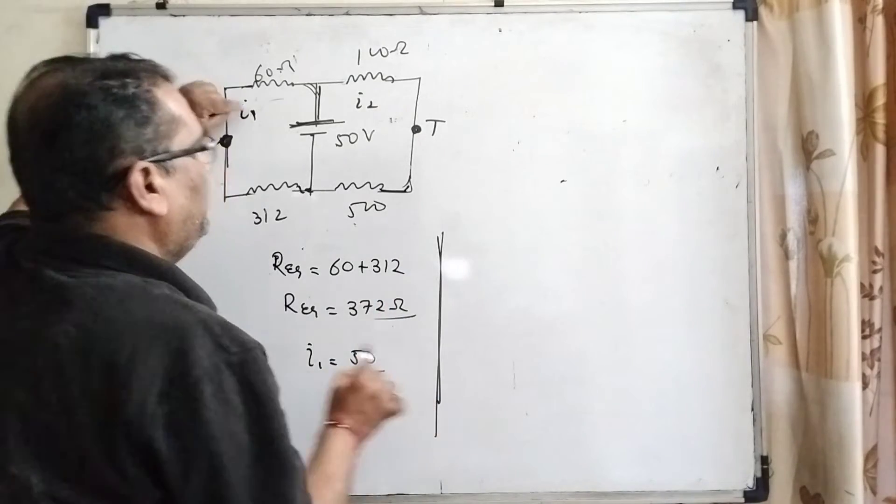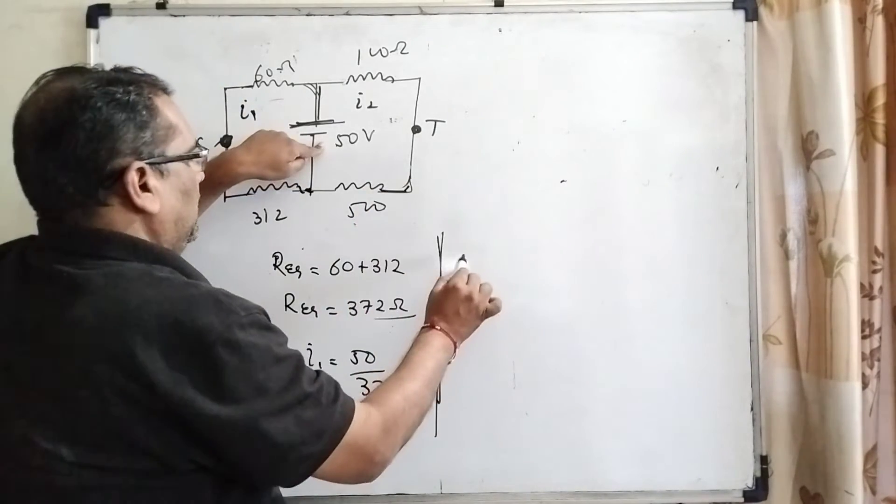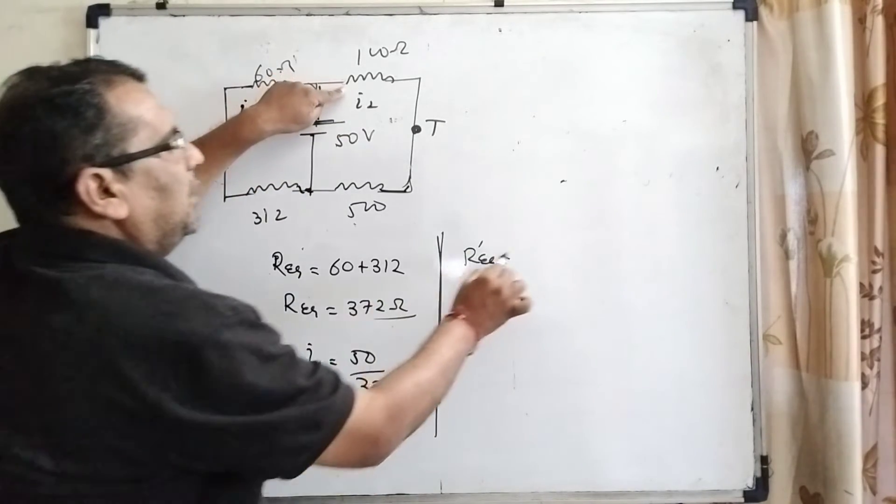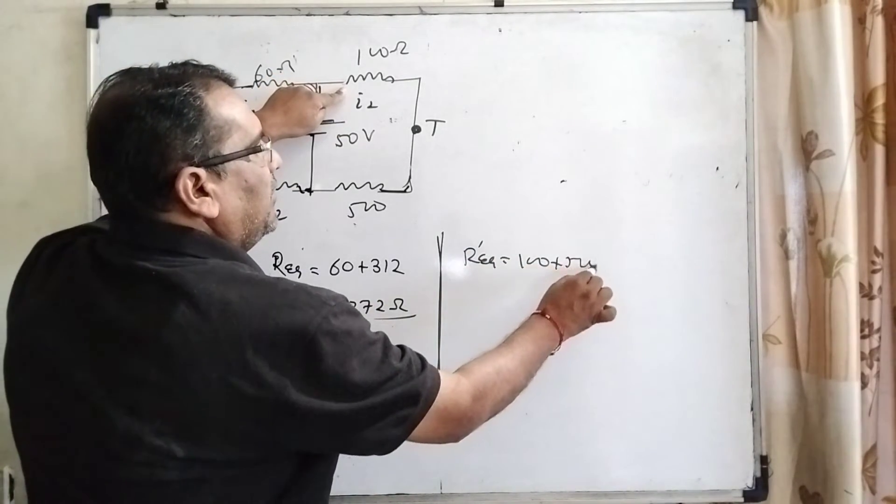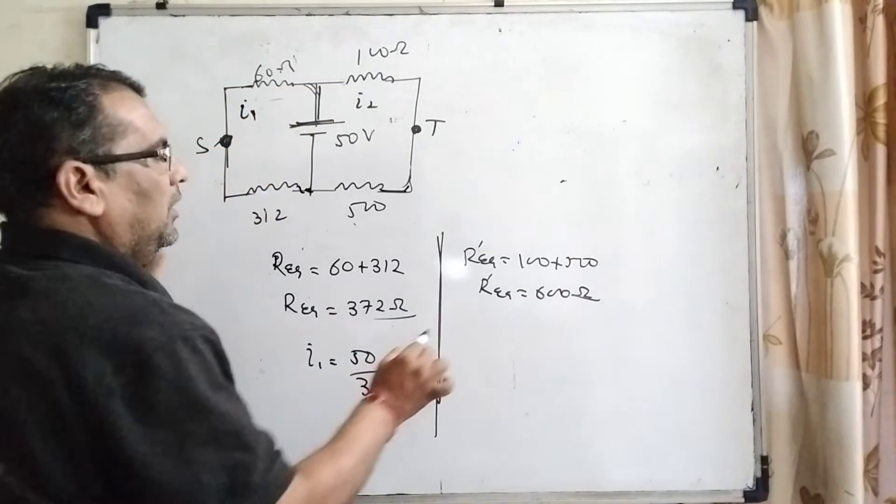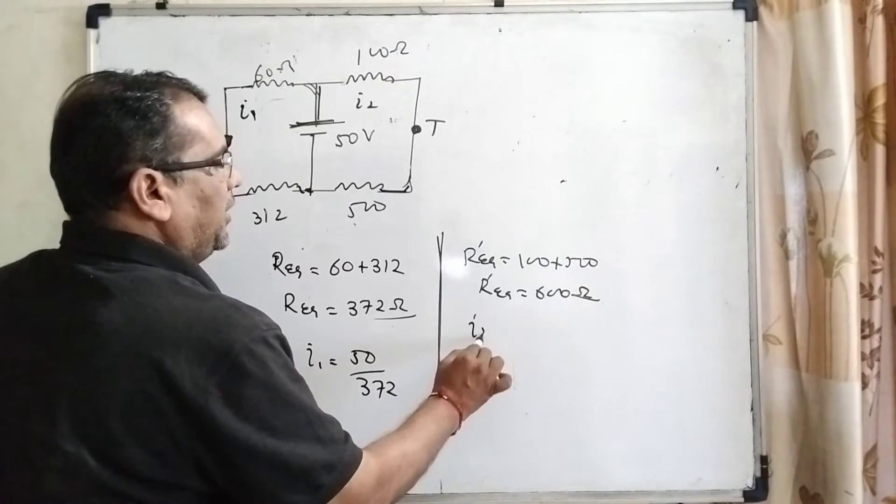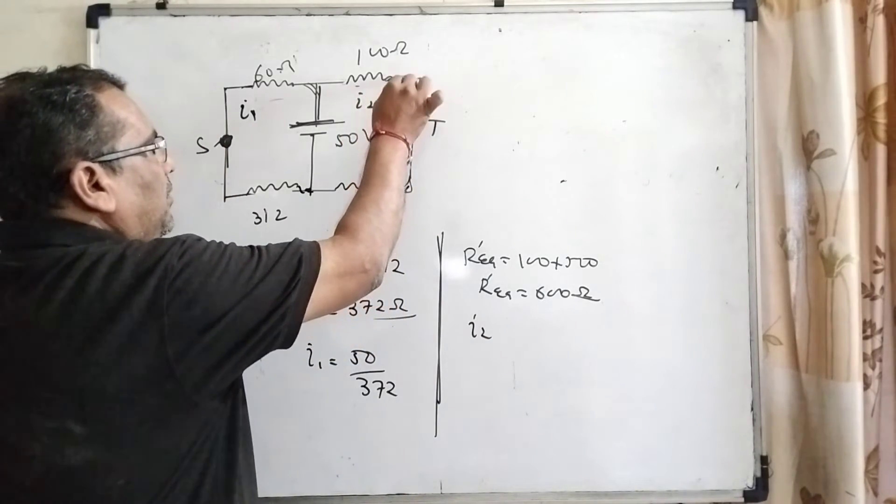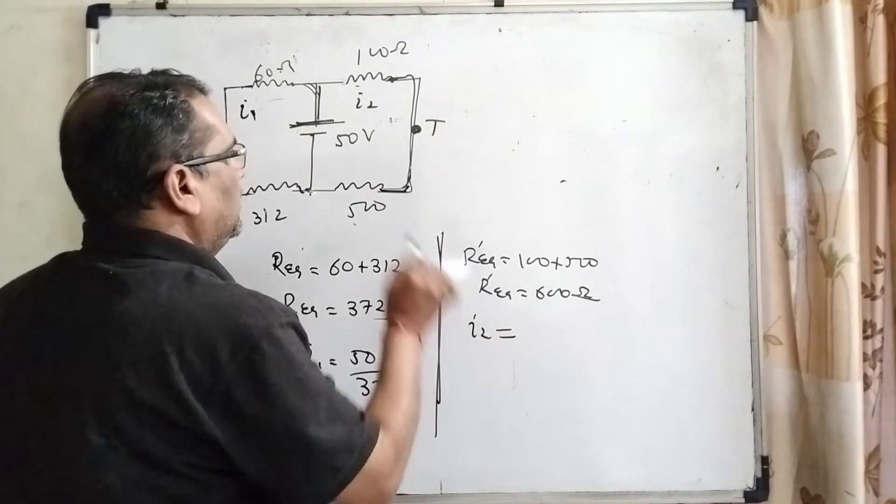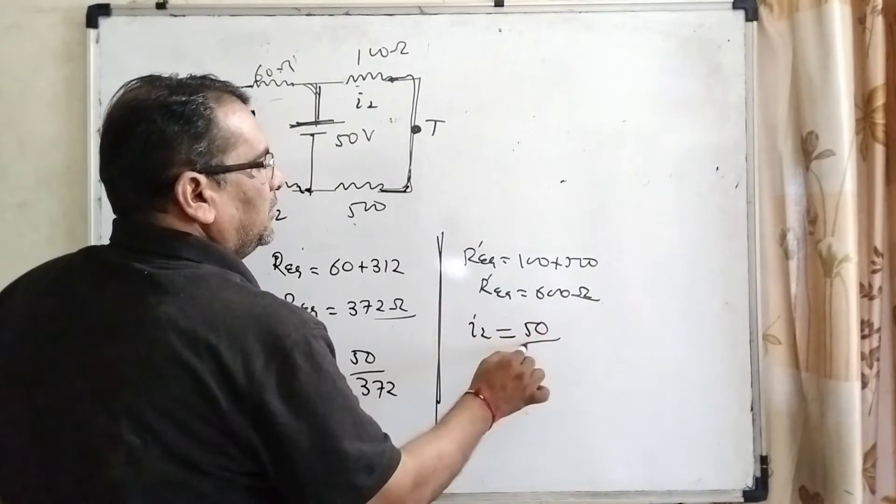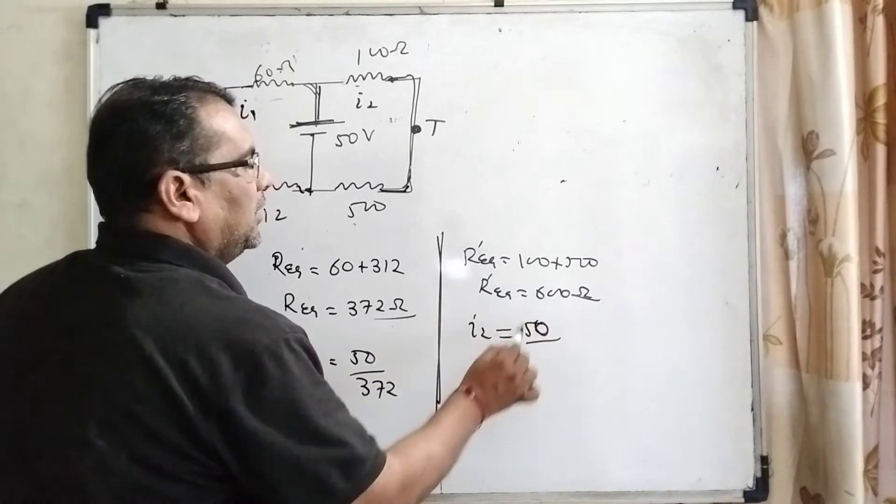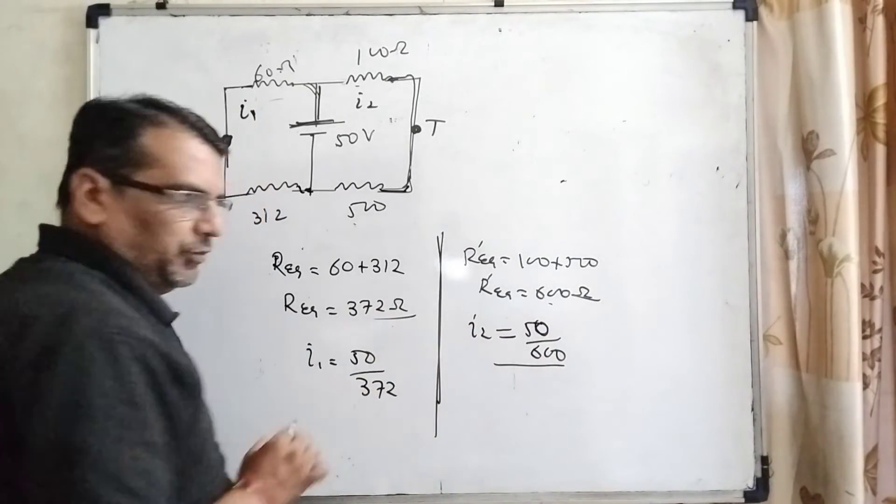And we're doing the same work here. Here the equivalent resistance is 100 plus 500, which becomes 600 ohms. And the current flowing is I2, which equals 50 divided by 600.